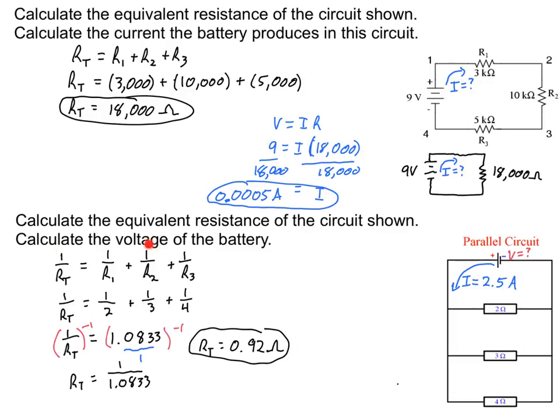All right, so last step, calculate the voltage that the battery ends up producing here. Now once again, I'm going to use Ohm's law, V equals IR, because now I have this circuit simplified down as if there was only one resistor. I know the current coming out of the battery, 2.5 amps, and I know the equivalent resistance, 0.92. Which means here I have a 2.3 volt battery.